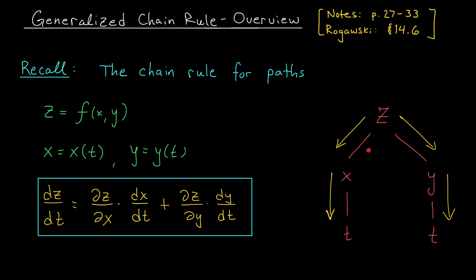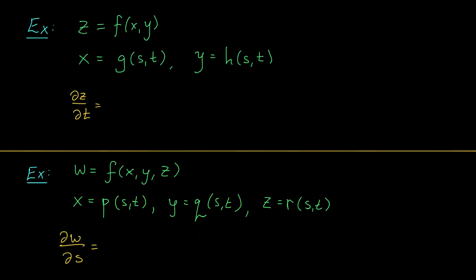But what happens if z depends on more intermediate variables? What if our intermediate variables depend on more than one independent variable? We're going to explore these situations in this video. But if you've understood this tree diagram, you're already 90% of the way there. I'm going to introduce the general multivariable chain rule by way of examples. So suppose first that we have a function z that depends on variables x and y, but now x and y each depend on two independent variables, s and t.